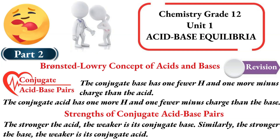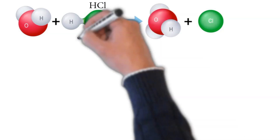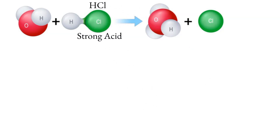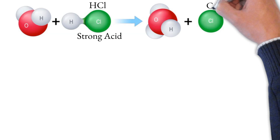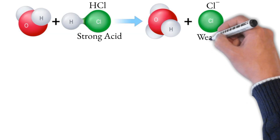So if the acid is stronger, then the conjugate base is weaker. If the base is stronger, then the acid is weaker. For example, hydrochloric acid is a strong acid, and therefore chloride is a weak conjugate base.